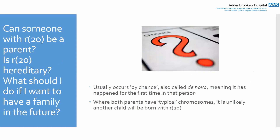A common question is: can someone with ring 20 be a parent — is it hereditary? Ring 20 usually occurs by chance. You may see the term 'de novo' used, which means it happened for the first time in that person — neither parent had ring chromosome 20. When both parents have typical chromosomes, it's unlikely they would have another child with ring 20. There's also the question of what ring 20 means for the children of someone who has it.